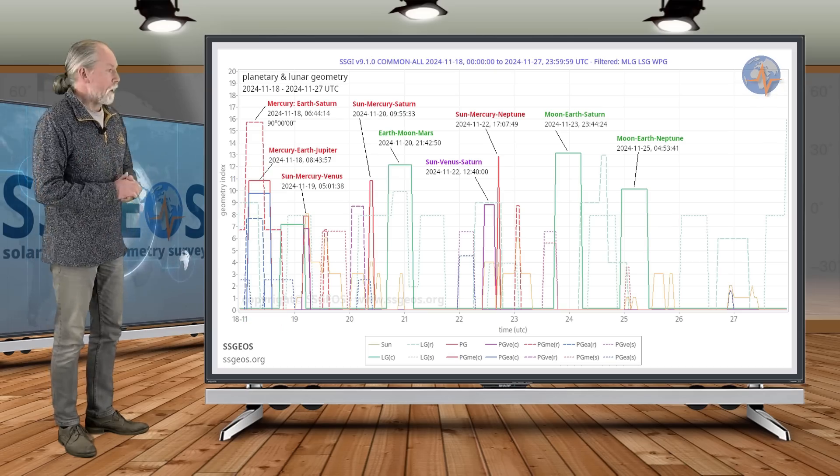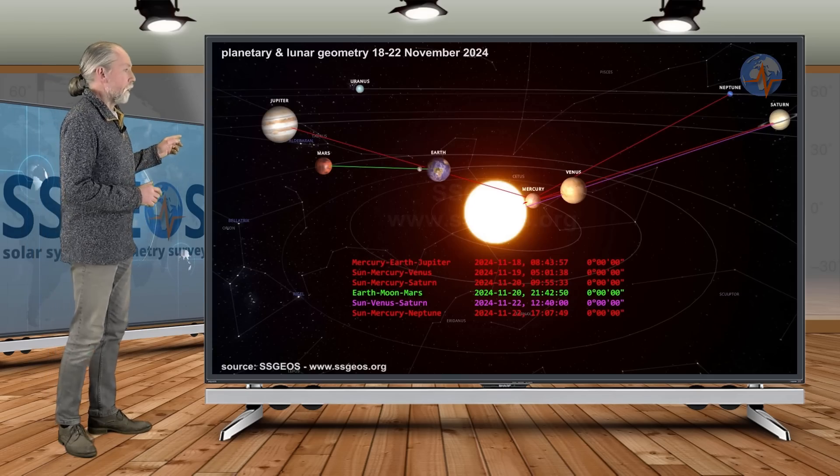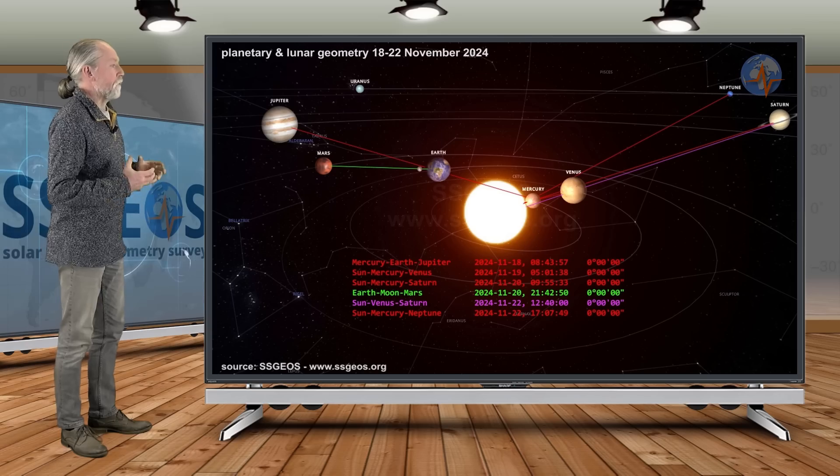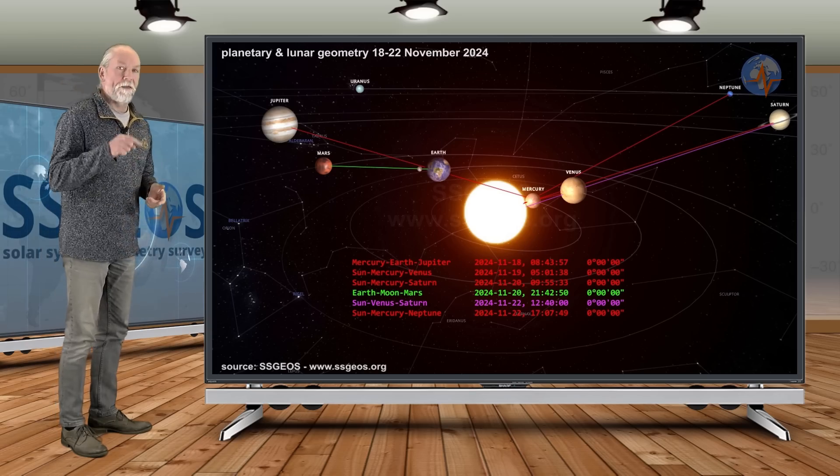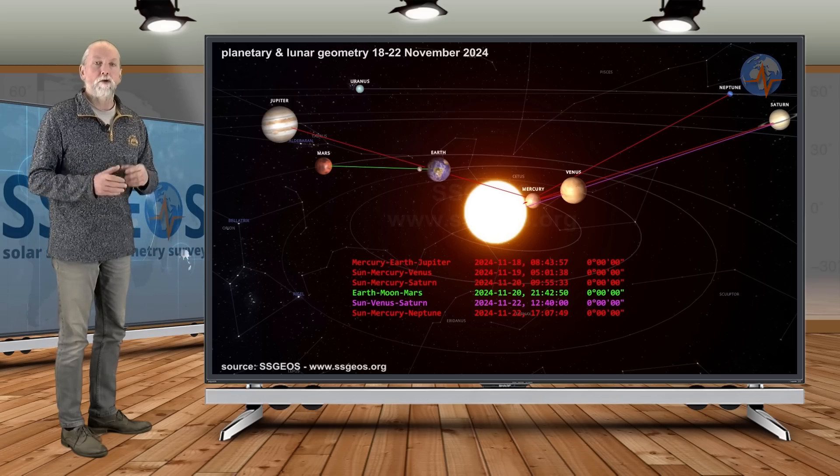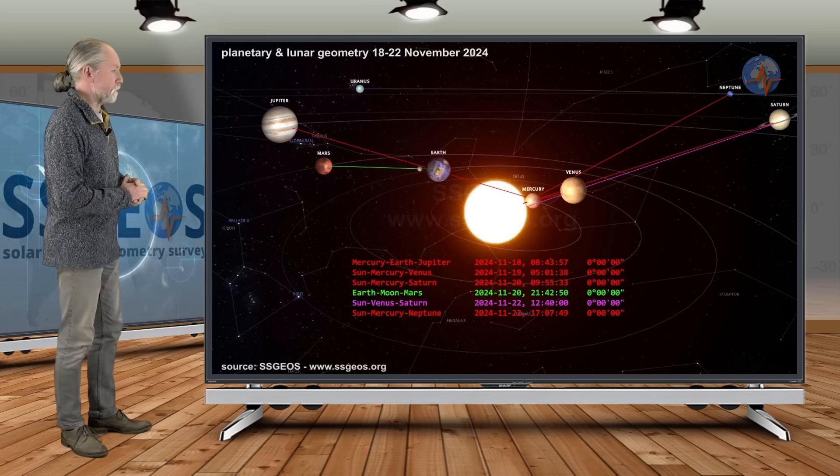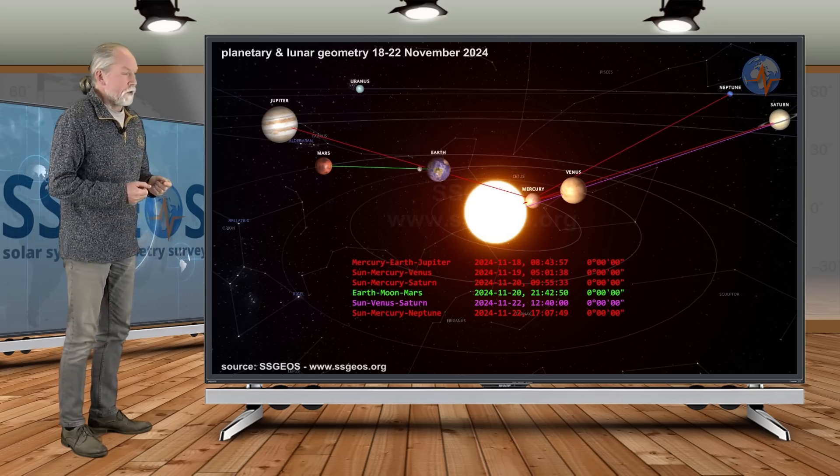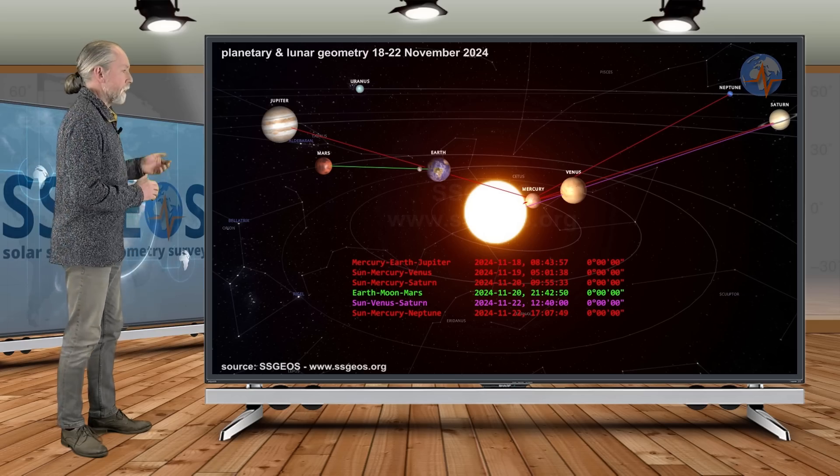Let's have a look at the solar system, how that actually looks like. Mercury and Jupiter yesterday morning, and that is followed by Sun-Mercury-Venus this morning.